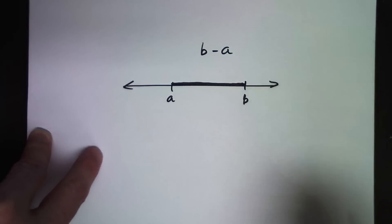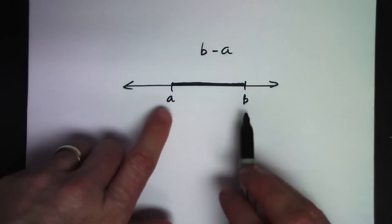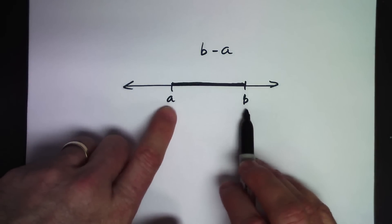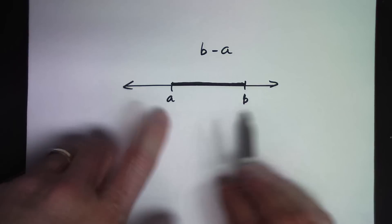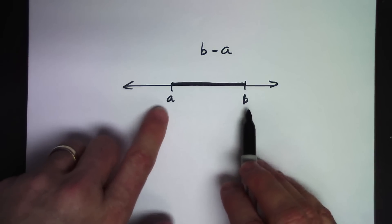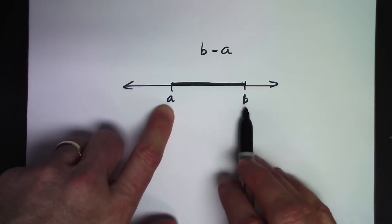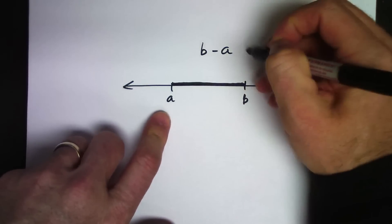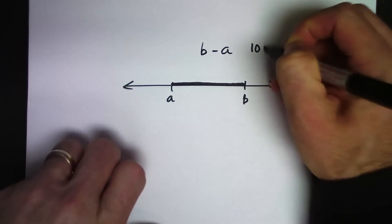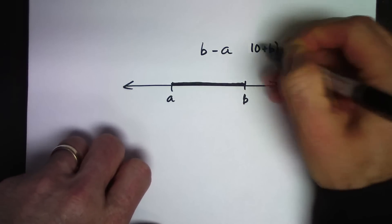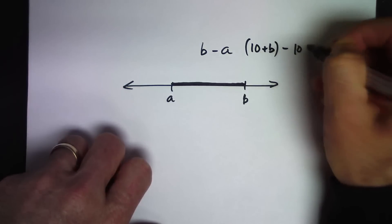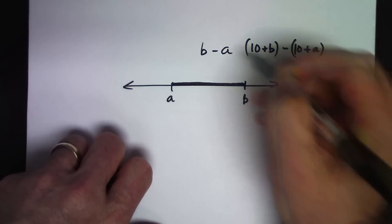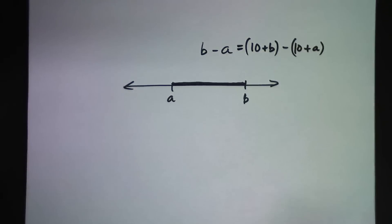So, the idea with the compensation or the constant difference algorithm is that if I shifted B and A by the same amount up or down the number line—in other words, if I added 10 to A and added 10 to B—the difference between (10+B) and (10+A) will still be the same as the original difference B minus A.